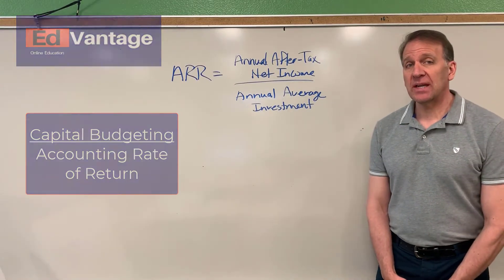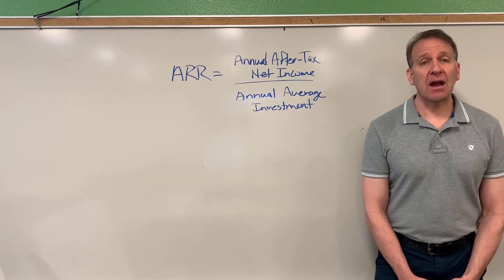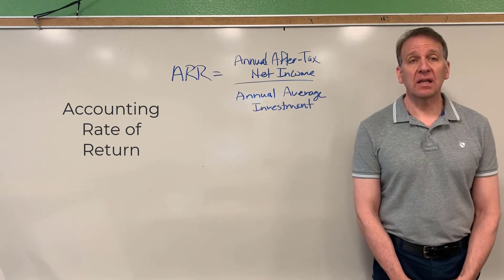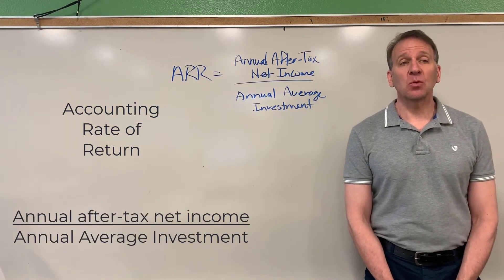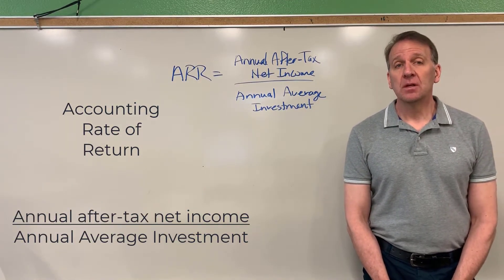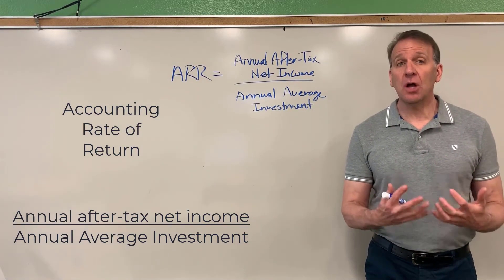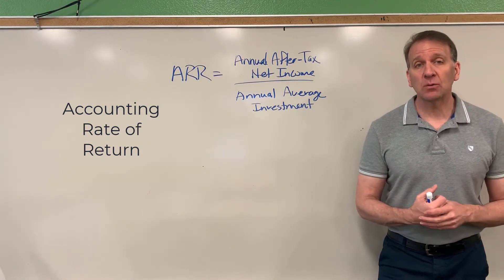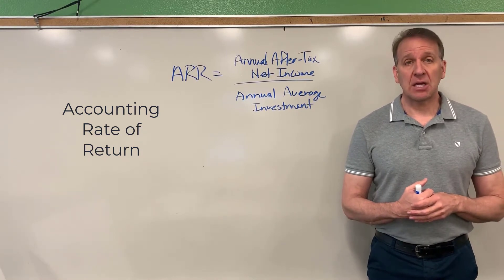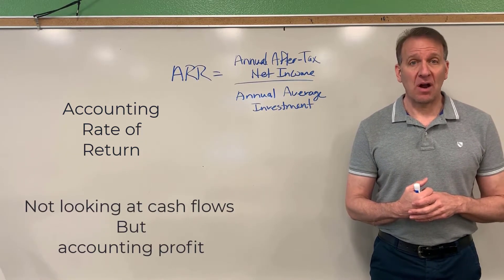As you can see on the board here, I have the formula for the accounting rate of return. It's the annual after-tax net income divided by the annual average investment. We're using the same type of information, except please know that when we're doing the accounting rate of return, we're not looking at cash flows — we're looking at accounting profits.